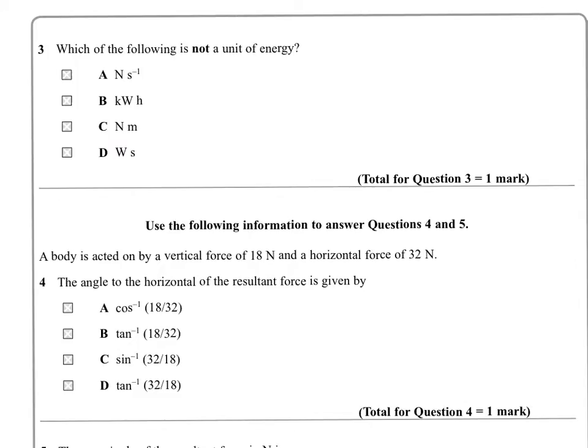Which of the following is not a unit of energy? We've got familiar ones like kilowatt hour, that's power times time. Anything that's power times time, which would include D with watts times seconds, will definitely be an energy. We also have newtons times meters, which is force times distance, so that's work, definitely energy. The odd one out here is newtons per second.